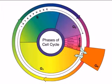There are four true stages of the cell cycle: G1, S, G2, and M.